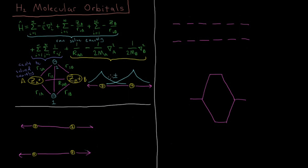Taking into account the Born-Oppenheimer approximation — that our nuclei are much heavier than our electrons, so the nuclei are stationary relative to the electrons and don't move — we're solving for the wave functions just of the electrons. With the nuclei fixed at one point, their kinetic energy is zero for both nucleus A and nucleus B. They're fixed at some point, so 1/RAB is a simple algebraic quantity, just 1 over a distance. All three nuclear-only terms become very simple algebra to compute those energies for a given configuration of nuclei.